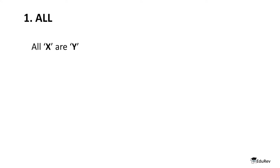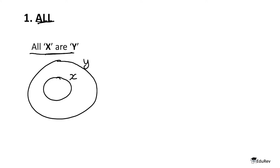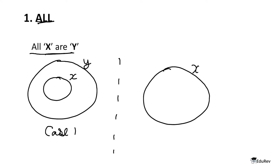So the first one is 'all'. The statement is 'all X are Y', and we will be making a Venn diagram for it. The first case that comes to mind is X inside Y — here all X are Y, let's call it case one. The second case we have is X and Y overlapping completely. Here in case two, also all X are Y. But the question is which diagram to draw when we are actually solving these questions in the examination.